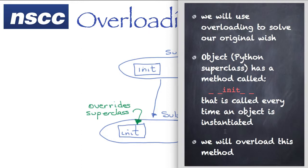We're going to use this concept of overloading to solve our desire to construct an object and initialize it at the same time. We'll overload a method in the Python object, the very top level object. There's a method called __init__. These special methods have two underscores at the beginning and end. Every time an object is instantiated or created, this method is invoked. We're going to overload this method.